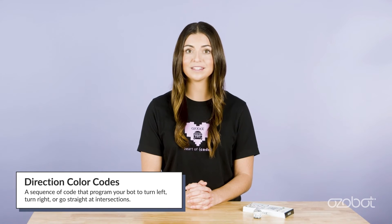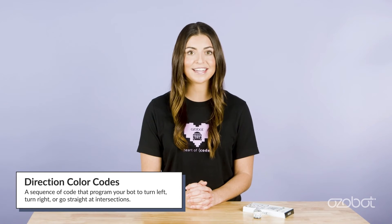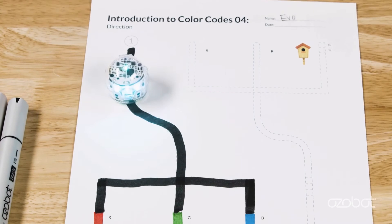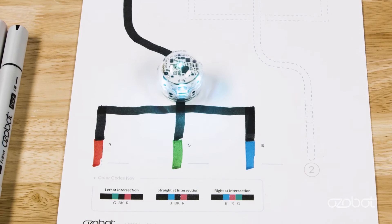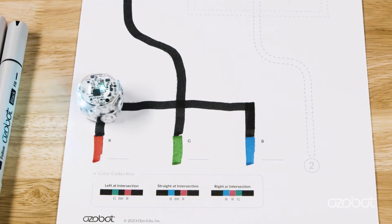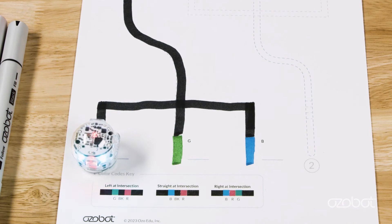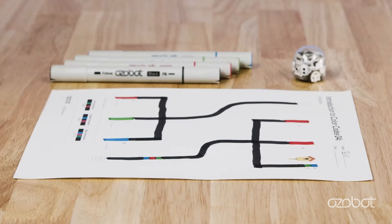There are direction color codes that program your bot to turn left, turn right, or go straight at intersections. The secret to these color codes is choosing the direction to turn based on the direction ozobot is traveling as it approaches the intersection. You'll program your bot to travel from Start 2 to the birdhouse — find Start 2 at the bottom of page one.